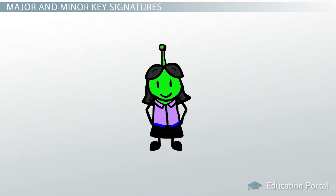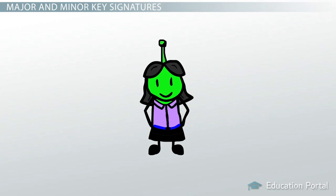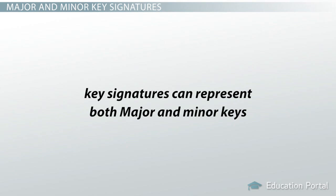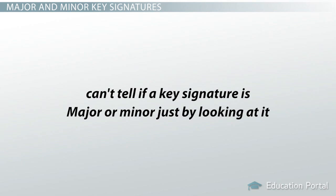Earthlings tend to get confused about these things. I can understand that, though. You know, you saw a familiar symbol and didn't realize it had two functions. It's like the key signature in music. Key signatures can represent both major and minor keys. Each key signature represents a set of notes, but we can't tell if a key signature is major or minor just by looking at it.